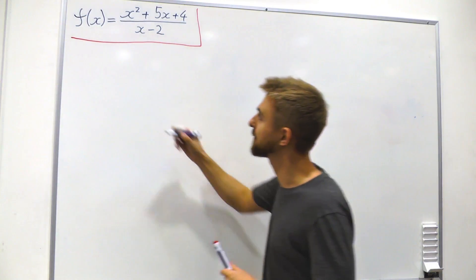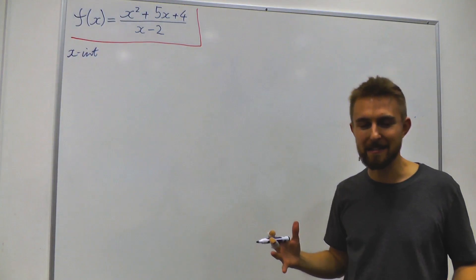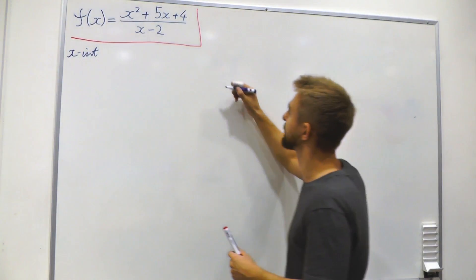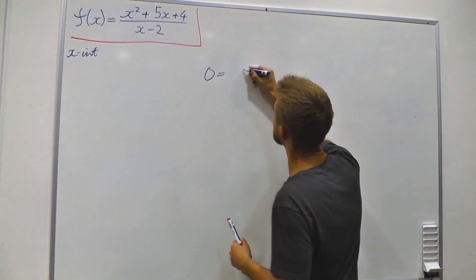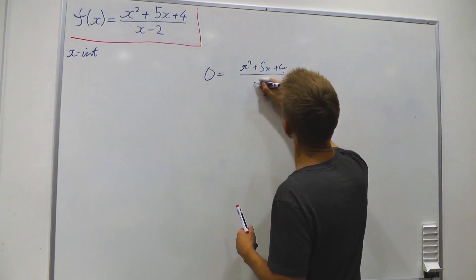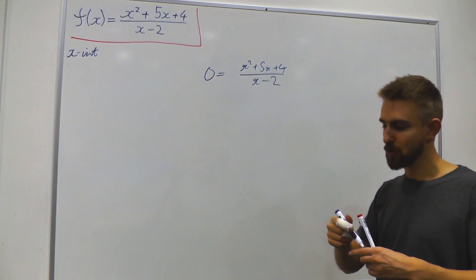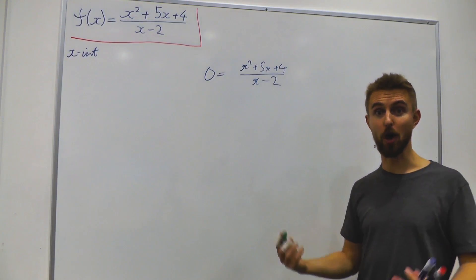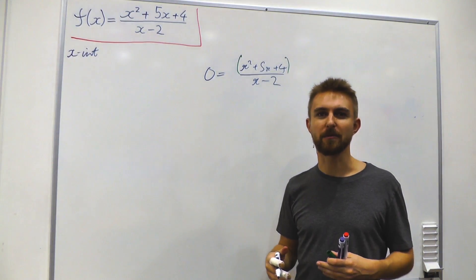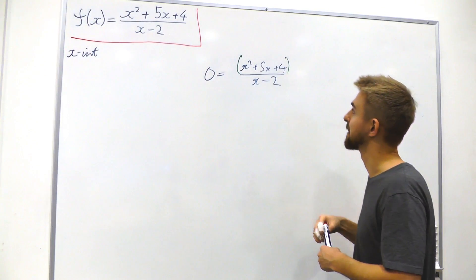The first thing we're going to look into are the x-intercepts. X-intercepts are where our y-value, our f(x) value, equals 0. So we set our function to 0: 0 equals x squared plus 5x plus 4, all divided by x minus 2. If our top line equals 0, then the whole thing must equal 0 — unless the bottom line equals 0 at the same time, and we'll come back to that in a minute.